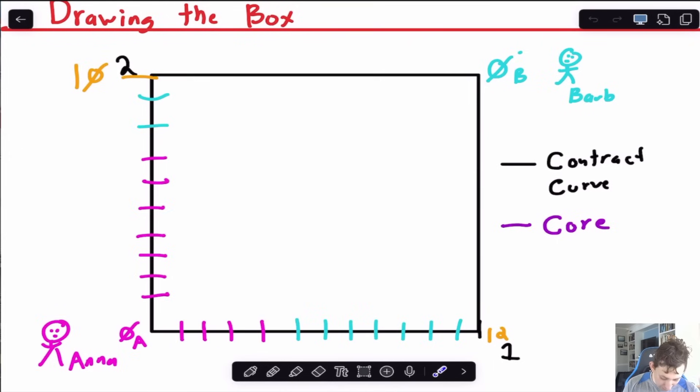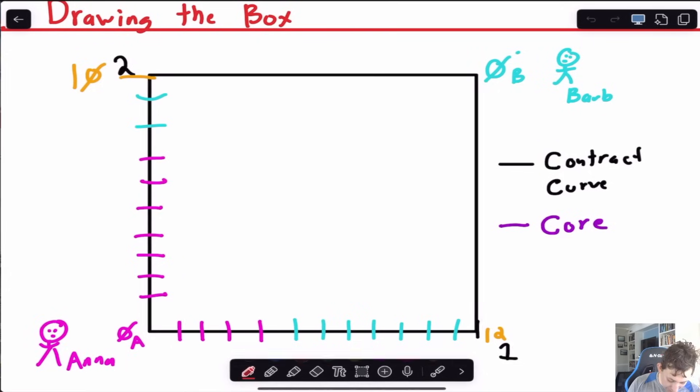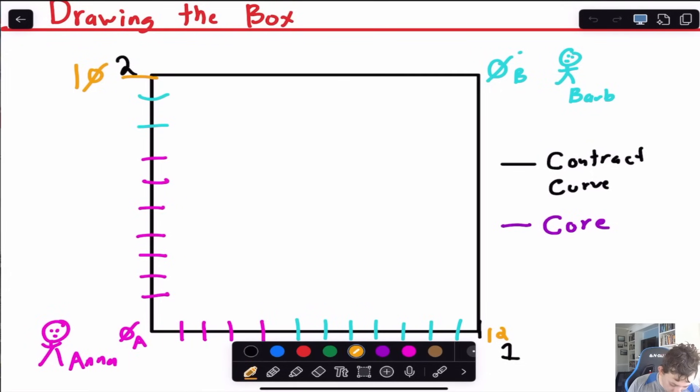I've just set this box up, 12 on the X-axis, 10 on the Y-axis. If I start with Anna, the endowment point is 1, 2, 3, 4 on the X-axis and 1, 2, 3, 4, 5, 6, 7 on the Y-axis. So here's the endowment point right here.